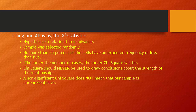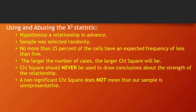The chi-square statistic assumes you've hypothesized a relationship in advance — it's a test of the null hypothesis. Chi-square also assumes your sample is selected at random, and that no more than 25% of your cells have an expected cell count of less than five. The larger the number of cases, the larger your chi-square statistic will become, since a larger sample reduces the risk of a type 1 error — you've collected more of the population.